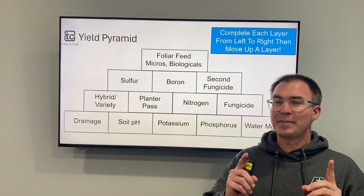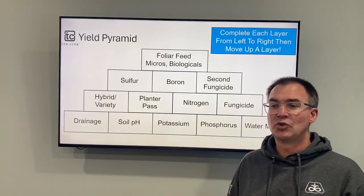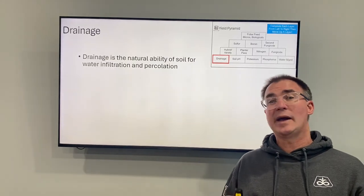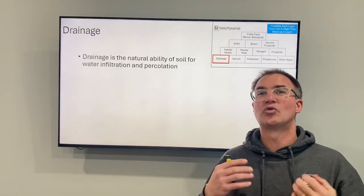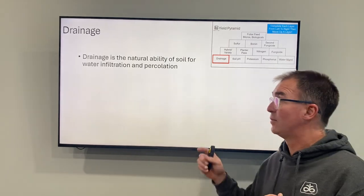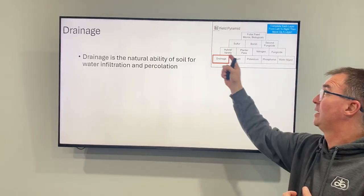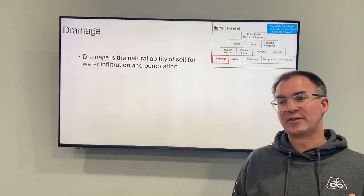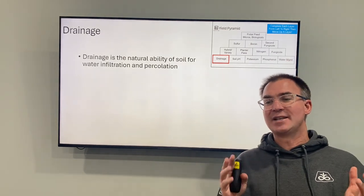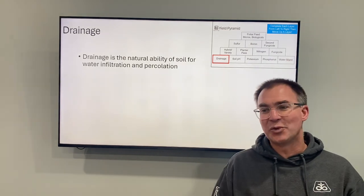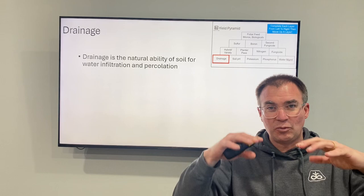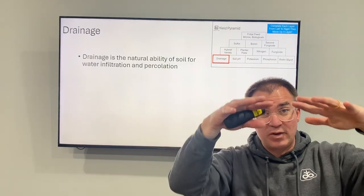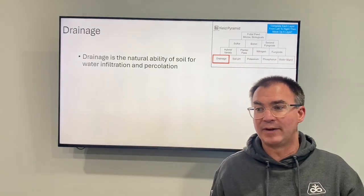What we're going to talk about now is starting at the bottom here, so we're going through drainage. Why do we need to focus on drainage? Why is that the most important block in the Yield Pyramid? Well, let's talk some definitions. Drainage is the natural ability of the soil for water infiltration — getting inside that soil profile — and then percolation, moving down through that profile.